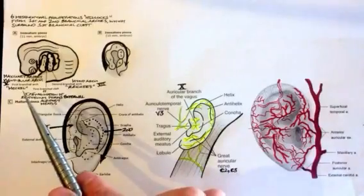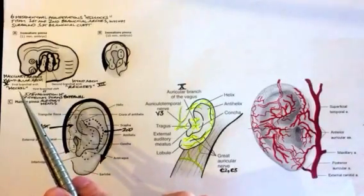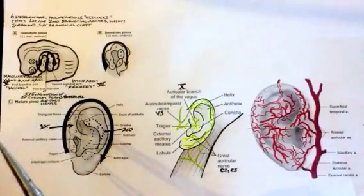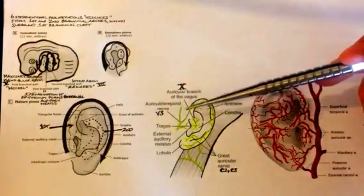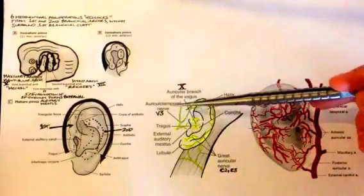The cartilage associated with the first branchial arch is called Meckel's cartilage. This makes a lot of sense when you're looking at the innervation of the anterior part of the ear because it's derived from the auriculotemporal nerve.